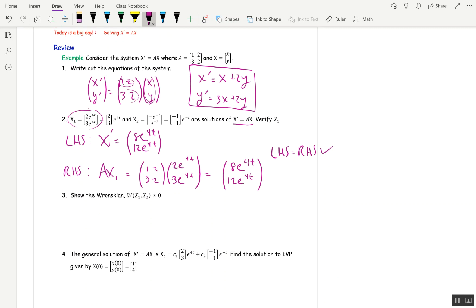Show that the Wronskian is not 0. Remember that the Wronskian for vectors is the determinant of X₁, X₂ put in as vectors. We don't take any derivatives. I'm going to put X₁ in: (2e^(4t), 3e^(4t)). That's my first column. Then put X₂ in as the second column: (-e^(-t), e^(-t)).